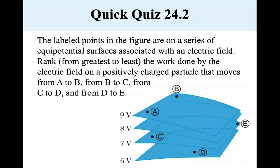And here we have some equal potential surfaces. So all of this whole surface is at nine volts. This one's at eight volts. This one's at seven volts. And this one's at six volts. And the idea is to rank them. It says rank from greatest to least the work done by the electric field on a positively charged particle that moves from A to B, from B to C, from C to D, and from D to E.